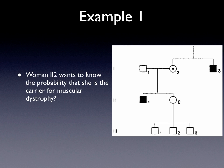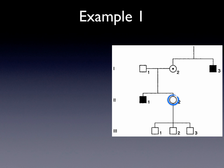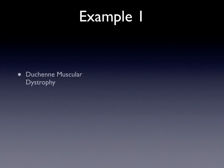Example one: Woman, Roman numeral 2-2, wants to know the probability that she is a carrier for muscular dystrophy. That's our person — we want to know her probability that she's a carrier. Before we get into the pedigree, we want to use the information already given in the question: what disease is it? It's muscular dystrophy, and specifically, since this is genetics, how is it inherited — it's X-linked recessive.